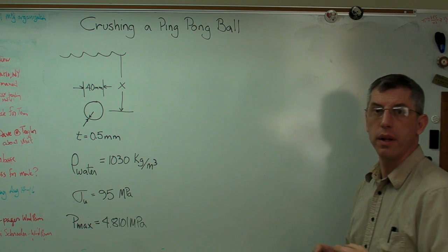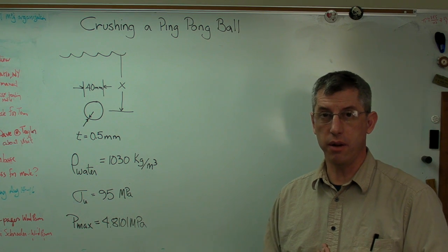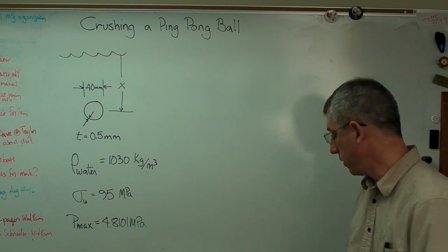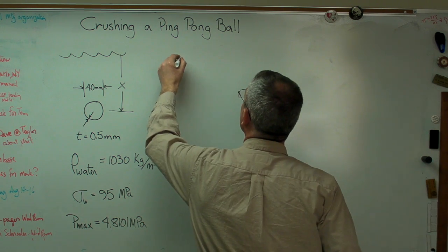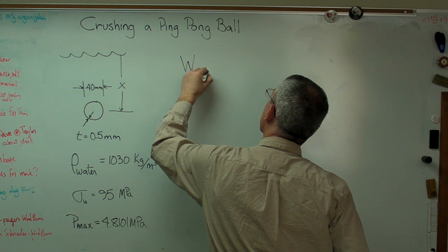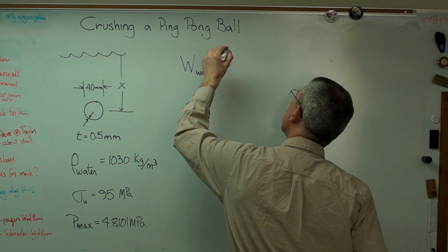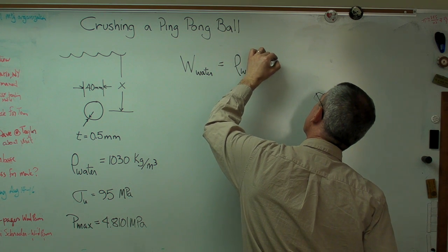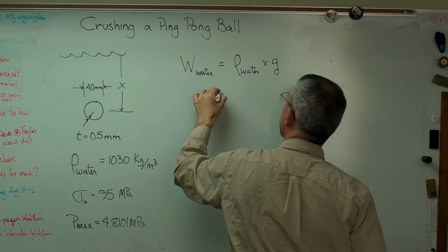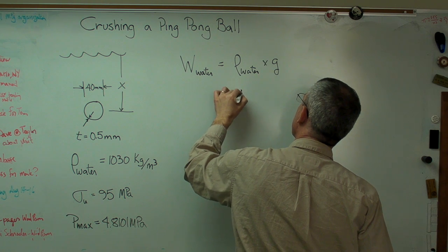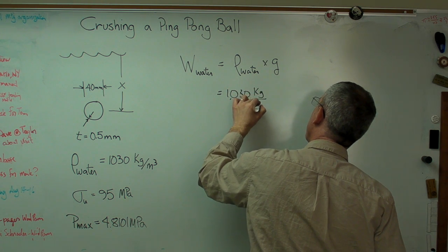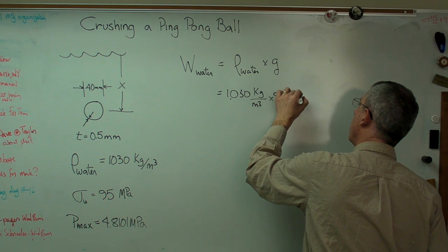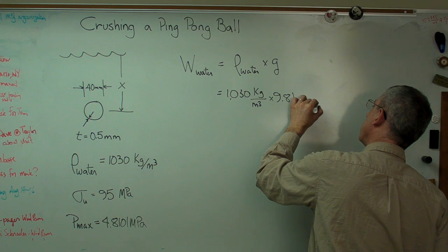Okay. Well, we know the density of water. We need to know the weight of water per cubic meter. So let's start there. Weight of the water is the density of water times acceleration of gravity. So we're going to get 1,030 kilograms per cubic meter times 9.81 meters per second squared.